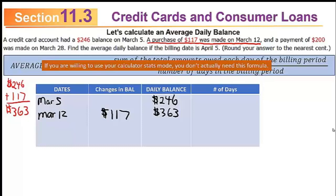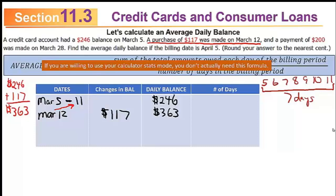Now pay attention — we want to find the number of days each daily balance occurred. The first daily balance of $246 started on March 5th and continued through March 11th, since it only changed on March 12th. Once you put in a new date, you can go back and fill the ending date on the previous row. Counting March 5th through 11th: 5, 6, 7, 8, 9, 10, 11 — that's 7 days. Remember, when counting consecutive dates, subtract and add 1, or just write them out and count to be sure.